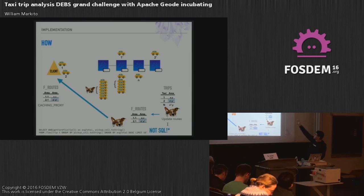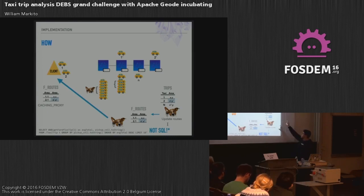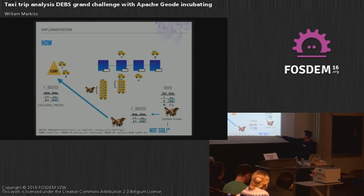Overall, this is the architecture we ended up with. We have a client that is sending taxi information to the cluster. That data is distributed and hashed. We have one region that receives all that data, and then a bunch of listeners monitoring the data there based on the batch we are specifying.